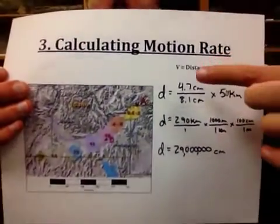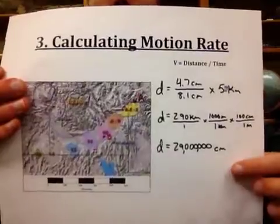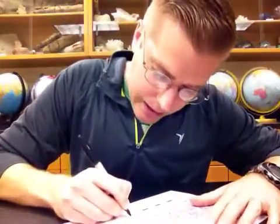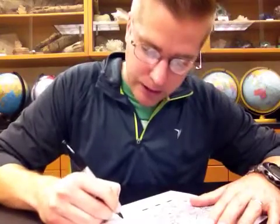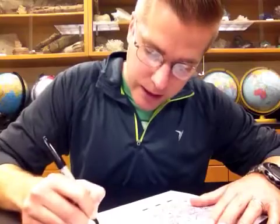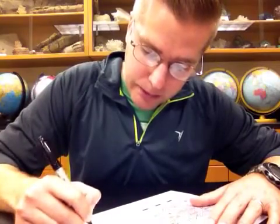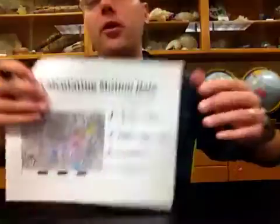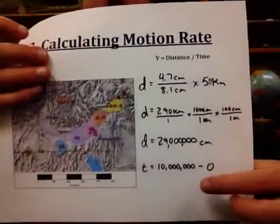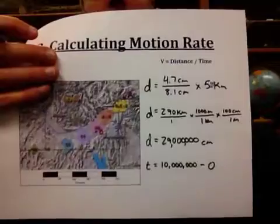That is the distance part of the equation. What we also need is time. And time, again, we're looking at point B being 10 million years ago and point A being today. So we subtract the 2, 10 million minus 0 for today. And we find that our age is 10 million years.